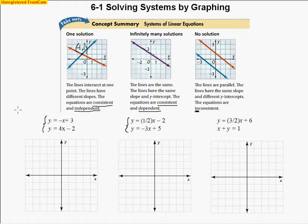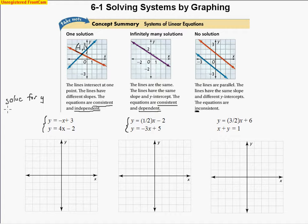The best way to solve these problems is to first solve for y. If y is not already isolated, solve for it. That way you can see if we have the same equation, and it's much easier to graph because you can identify the y-intercept and the slope directly from slope-intercept form.